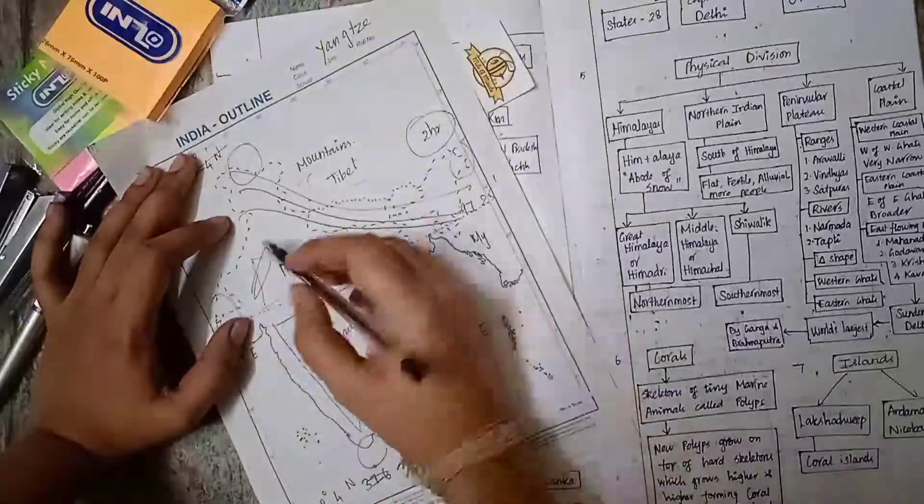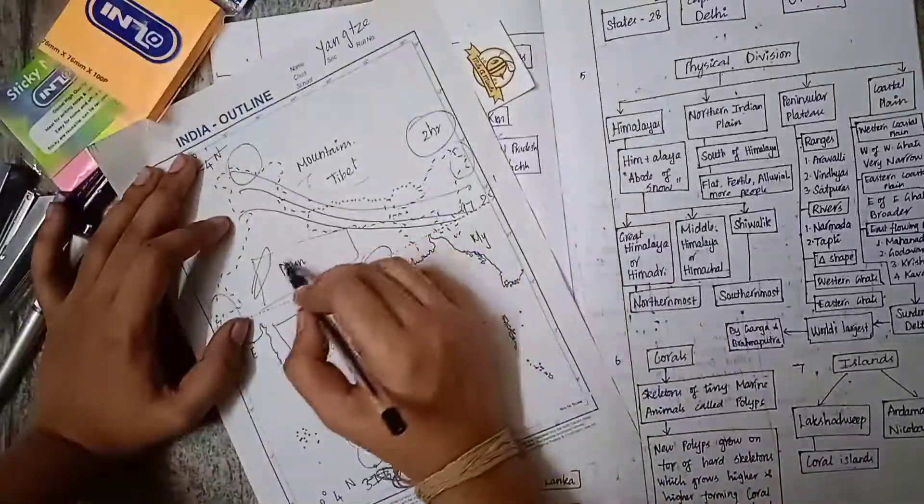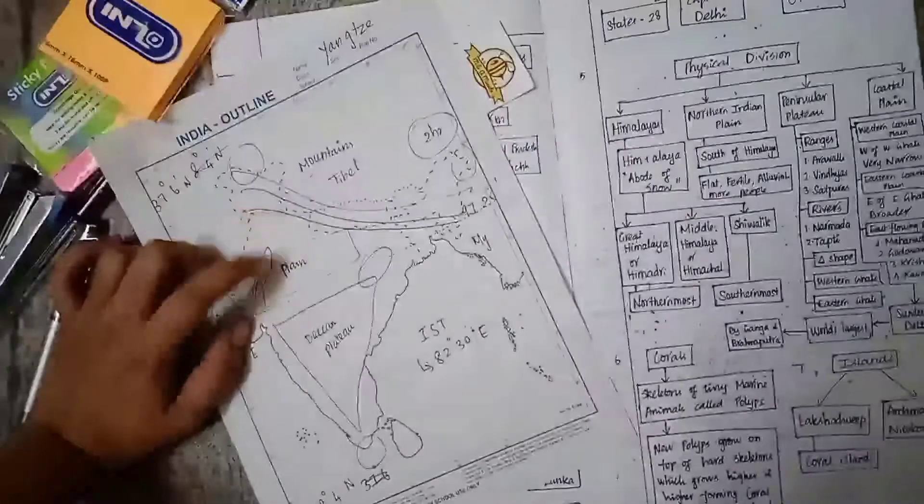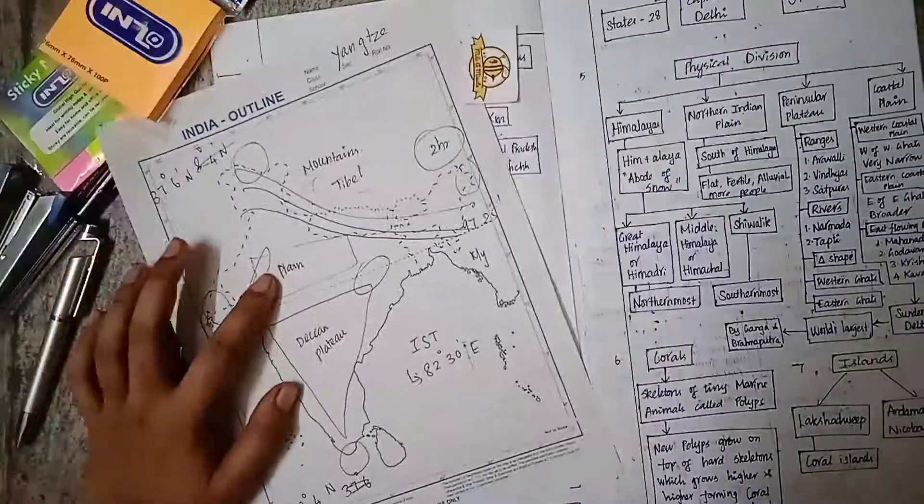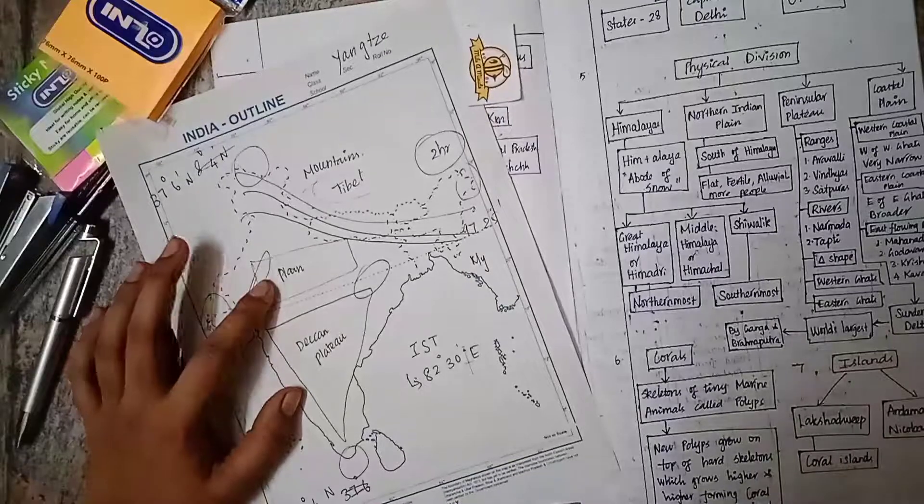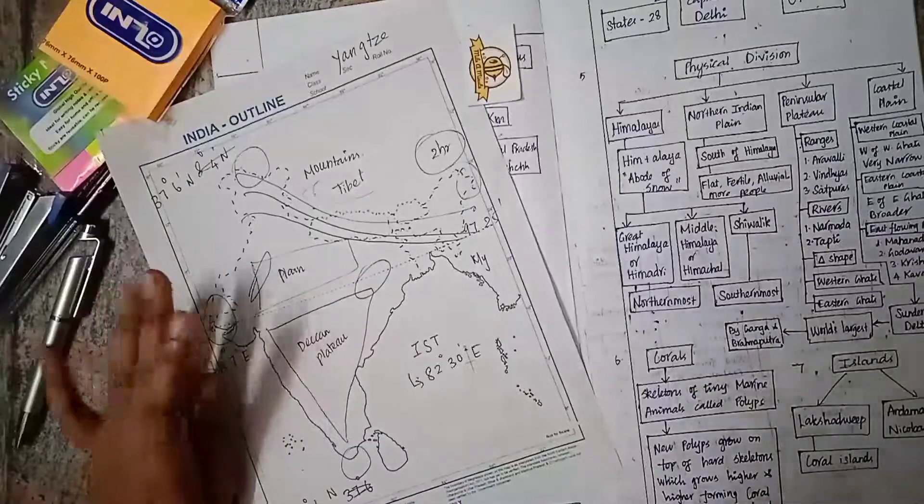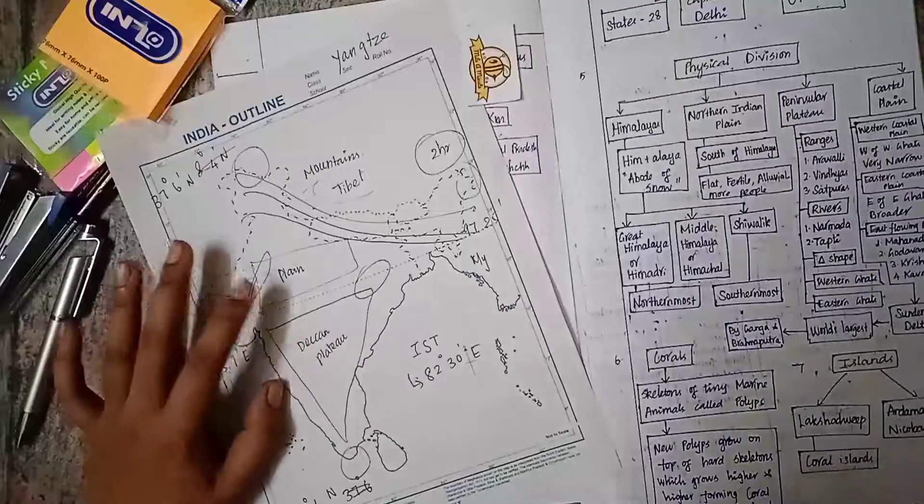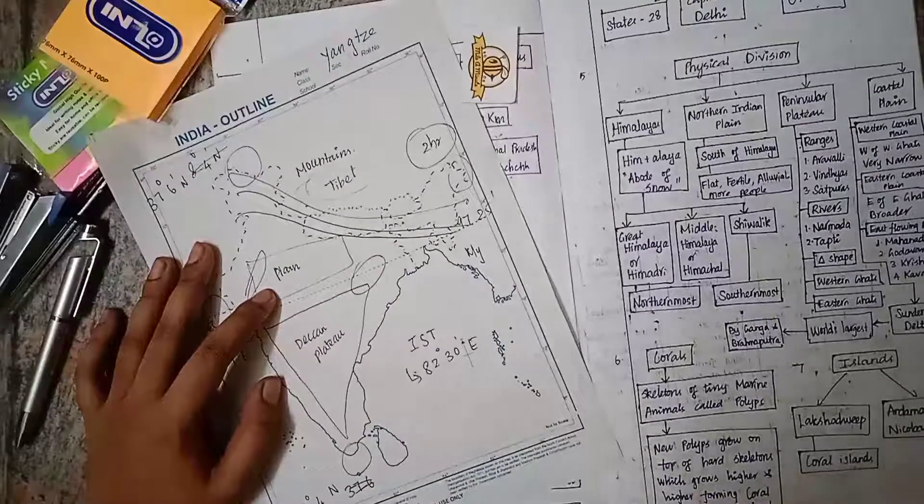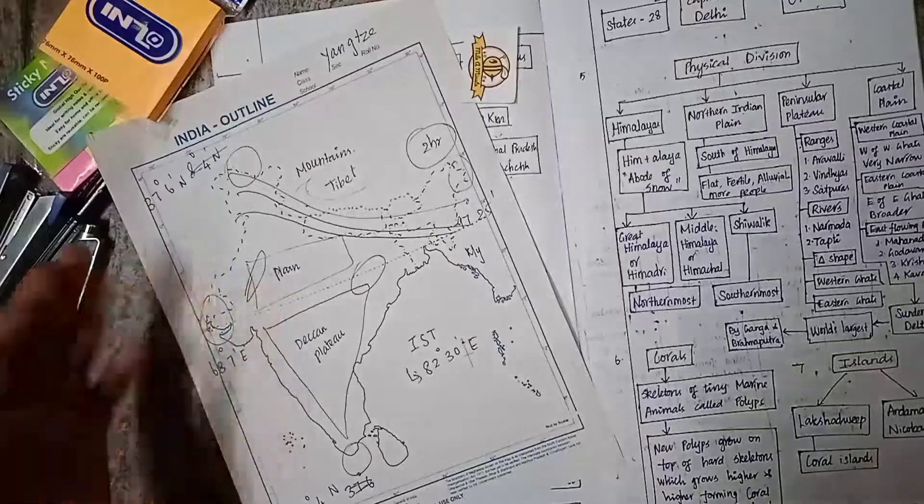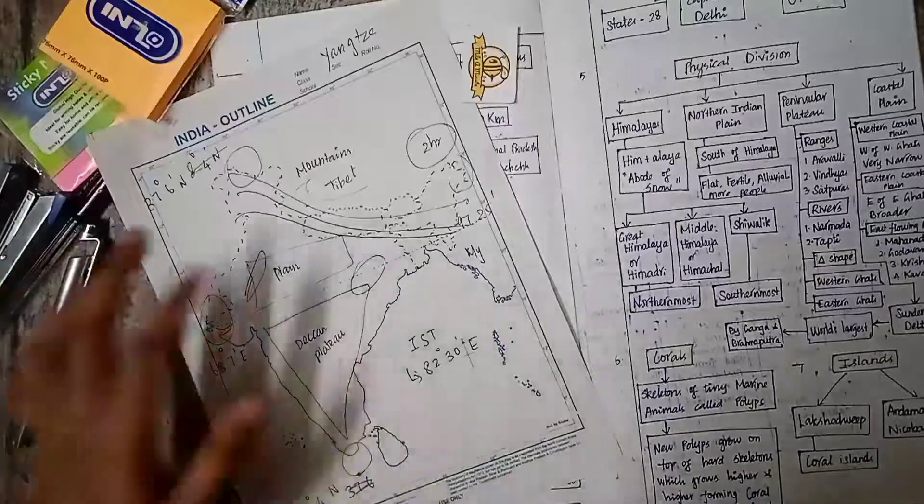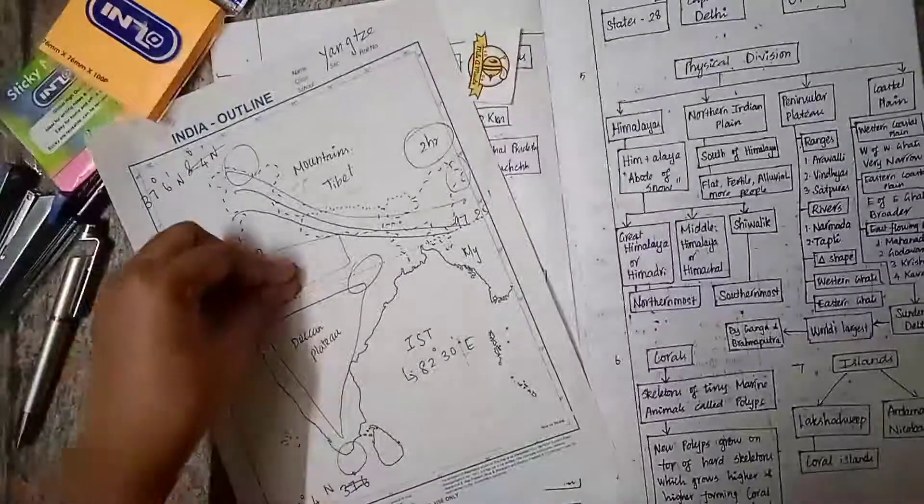Below Shivalik, we have the Northern Indian Plain. It is south of Himalayas, flat, fertile, and alluvial. It has more people because it's suitable for agriculture and transportation due to its fertility. An example is the Indo-Gangetic Plain in India.